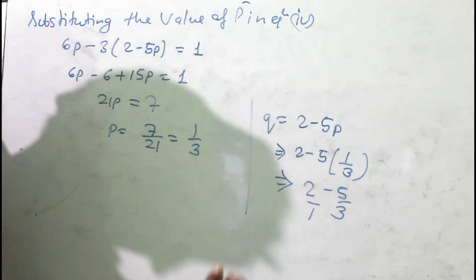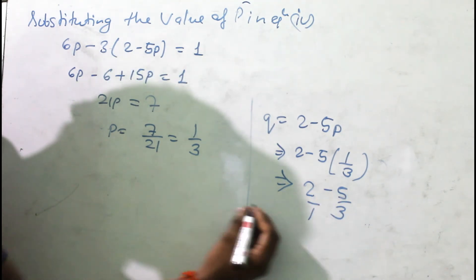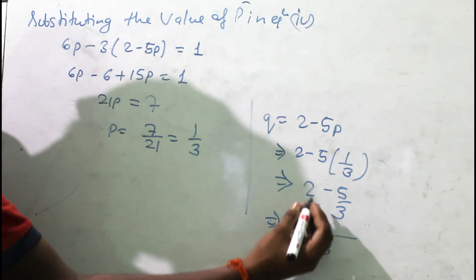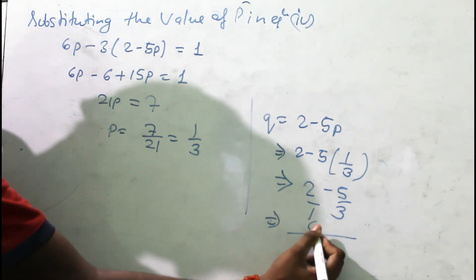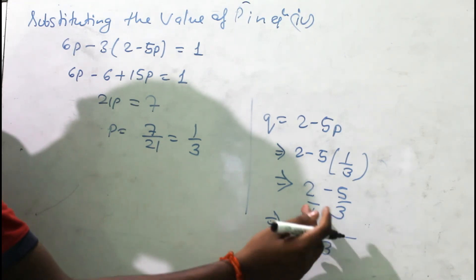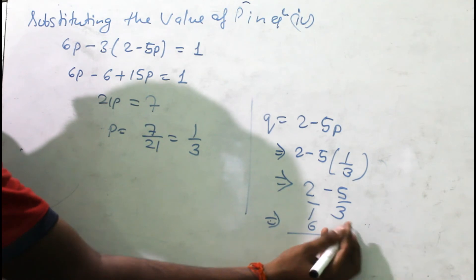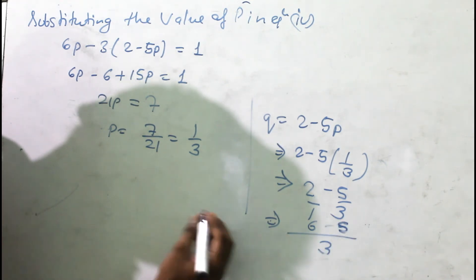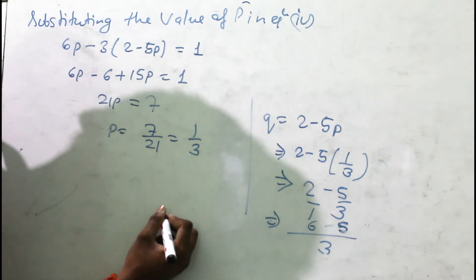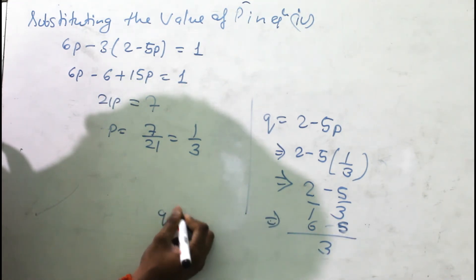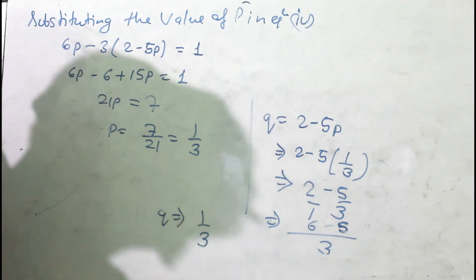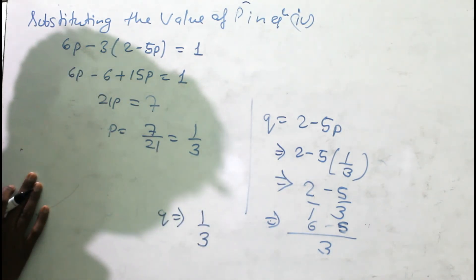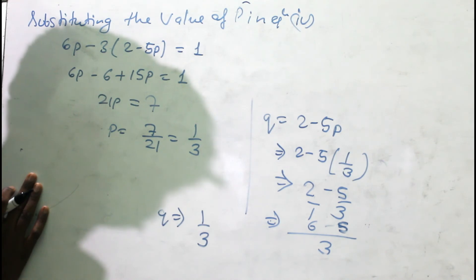Taking LCM as 3: q = (6 - 5)/3 = 1/3. So q = 1/3. Both p and q have the value 1/3.